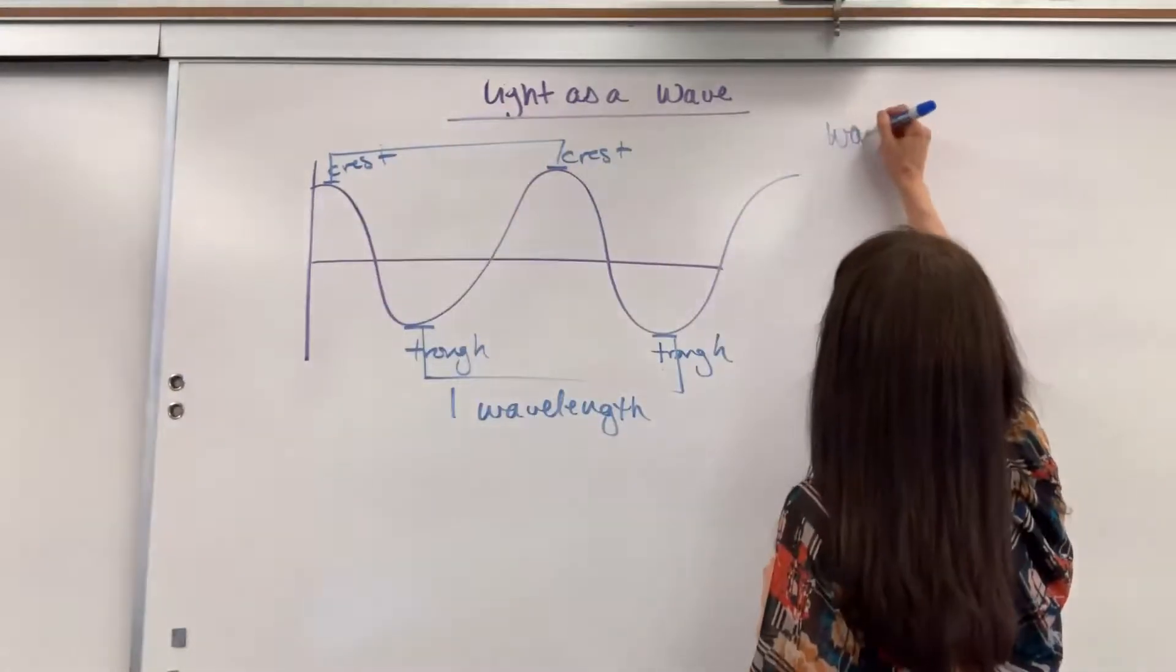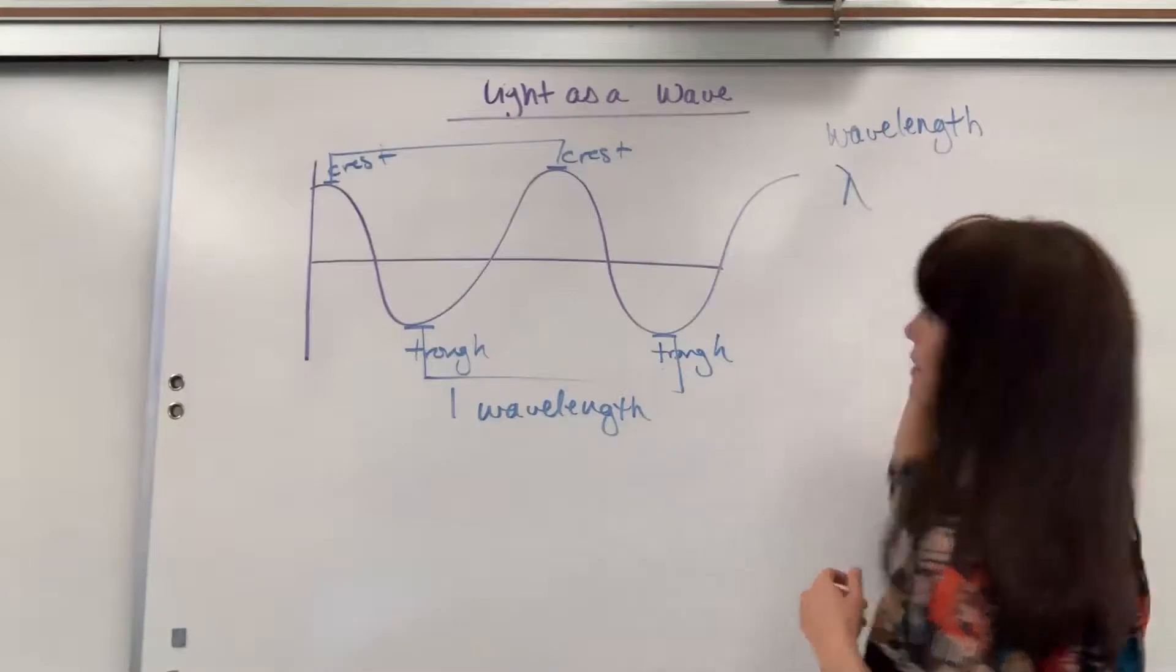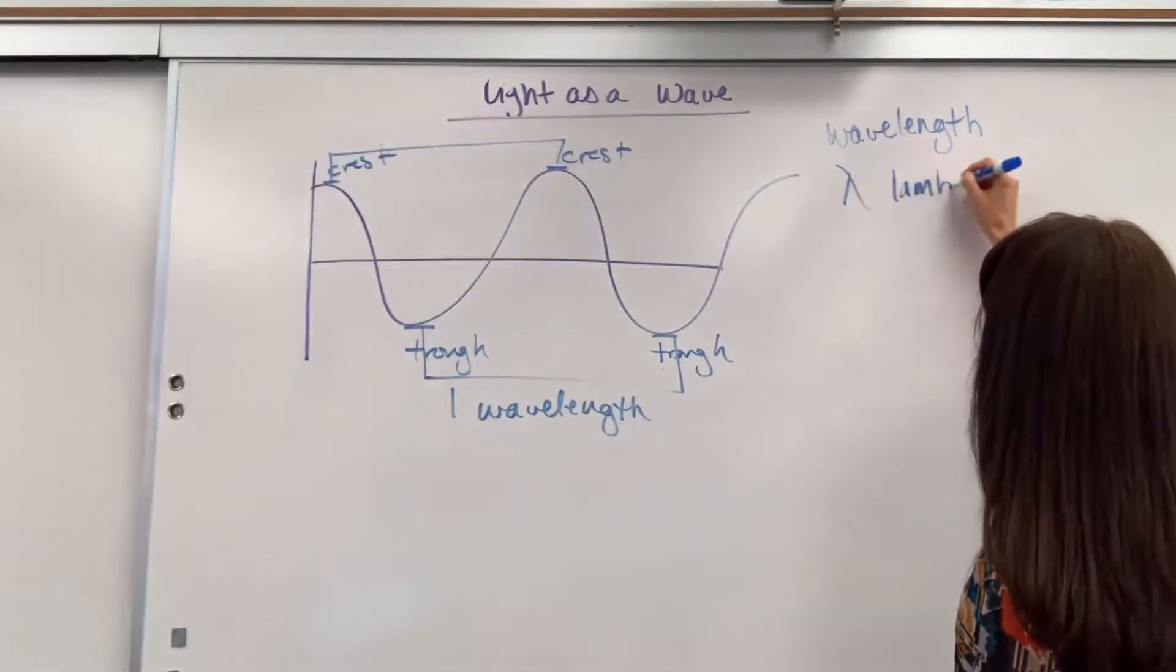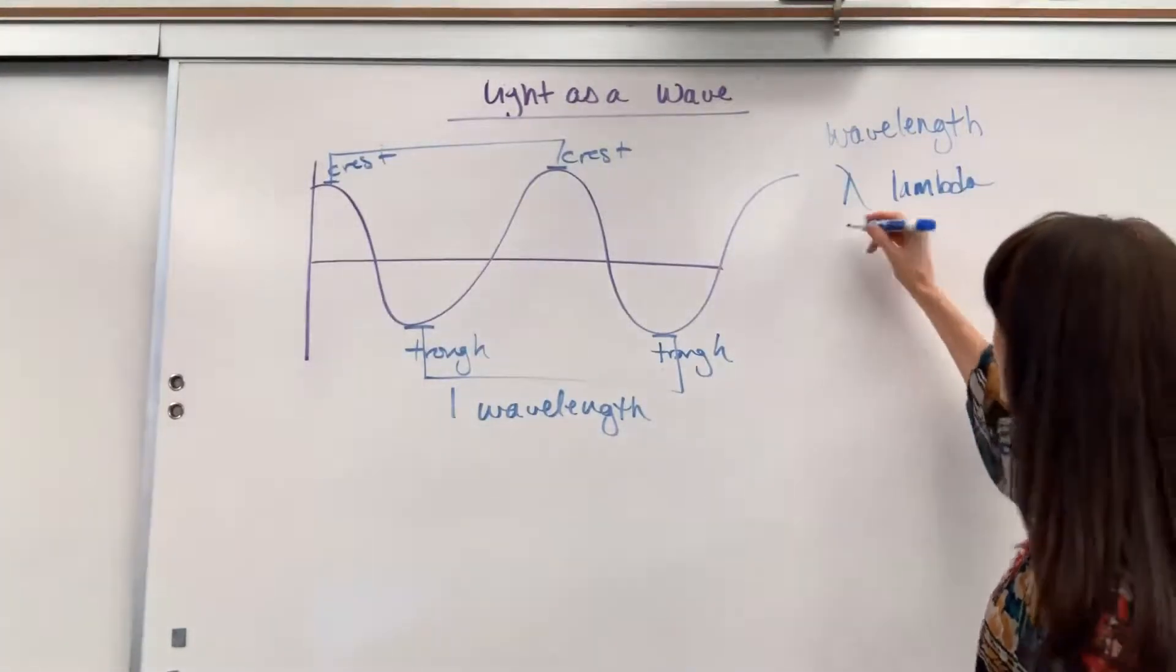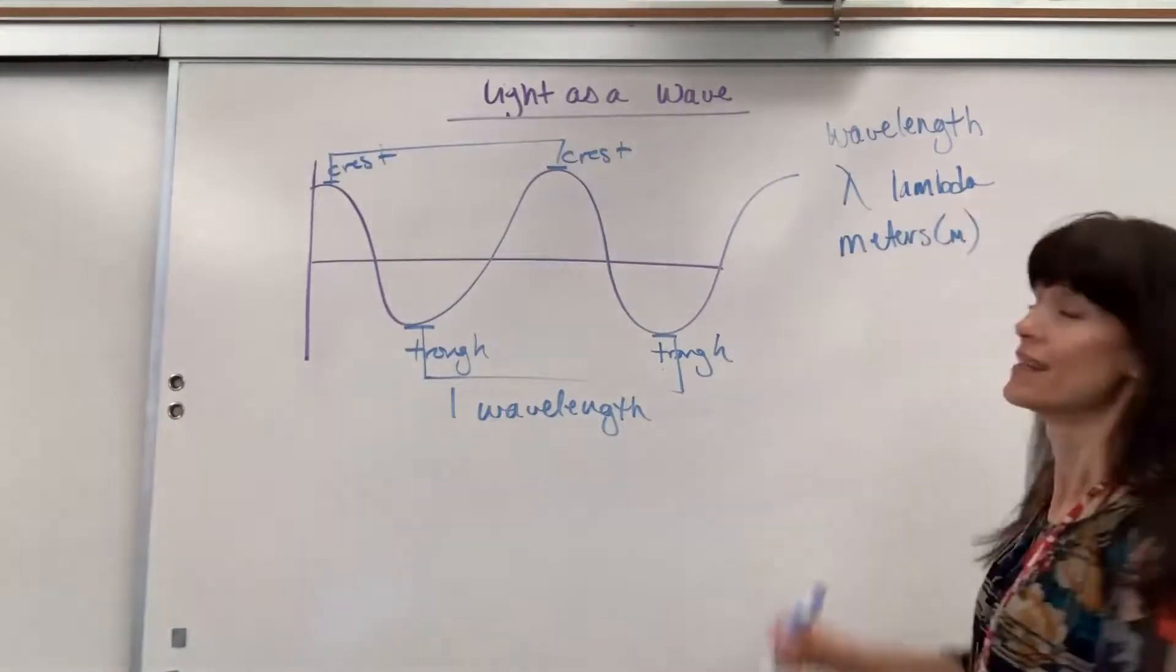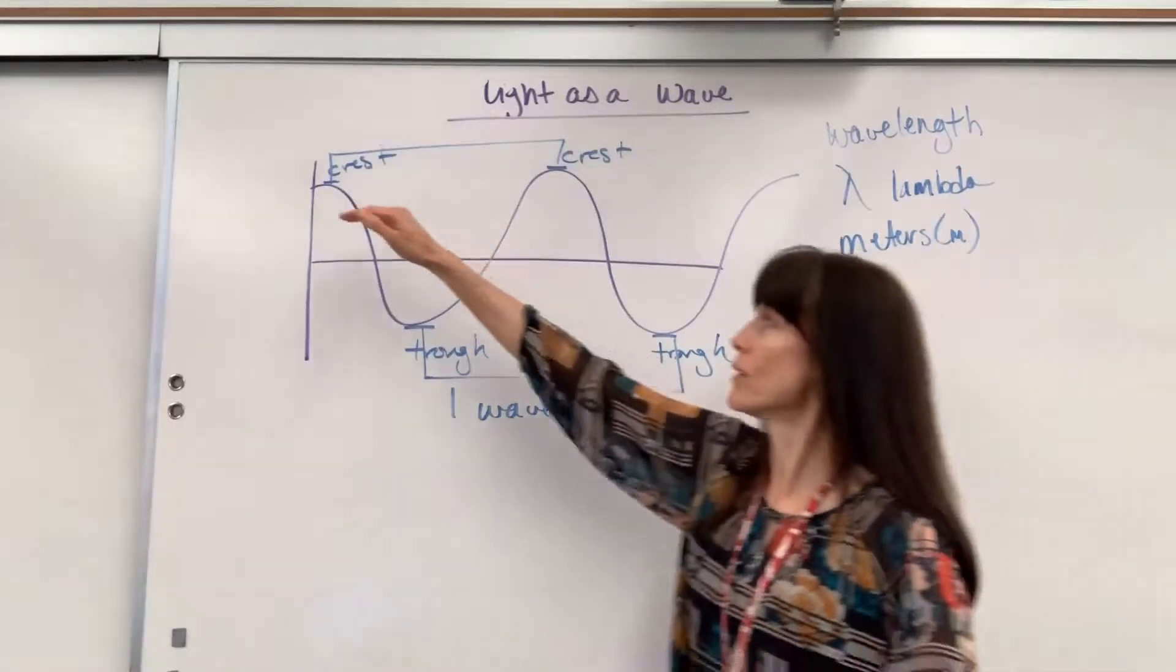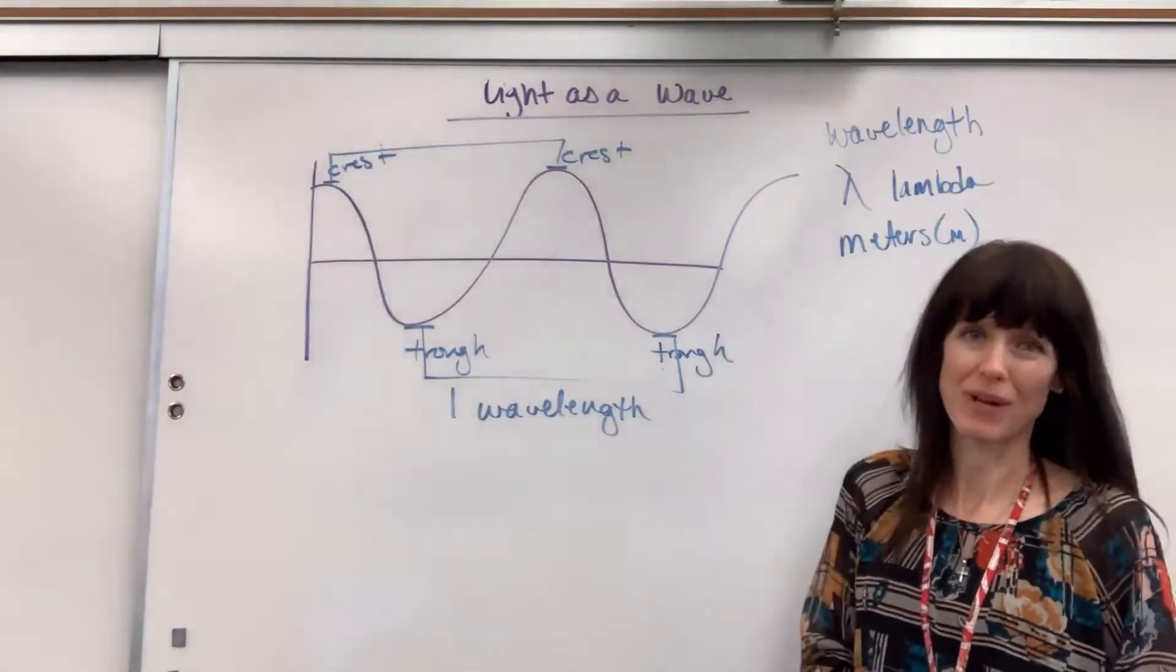Now the wavelength has a special symbol. It is lambda. It's from the Greek alphabet, spelled out for you. So when I say lambda, I'm referring to wavelength. And the units are meters. We measure in meters. Now that's very important to keep that in your mind. So when we're talking about wavelength, I'm going up, down, back up. That's going to be one wavelength.